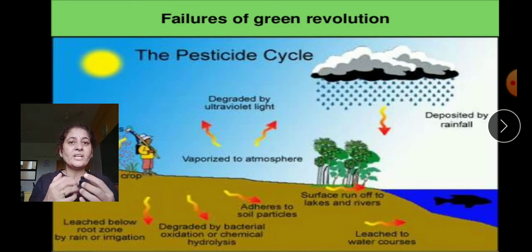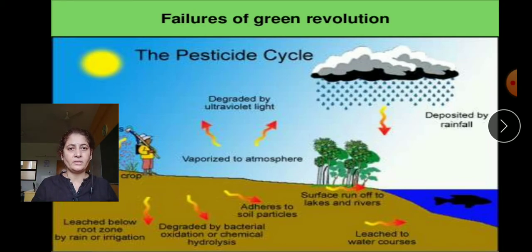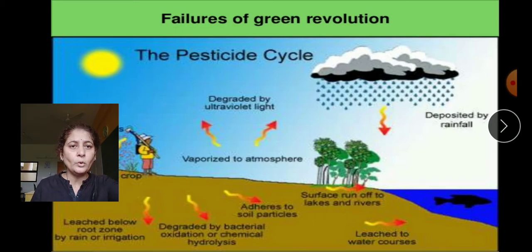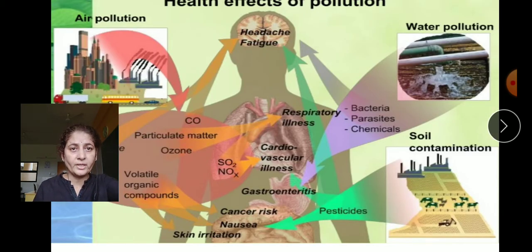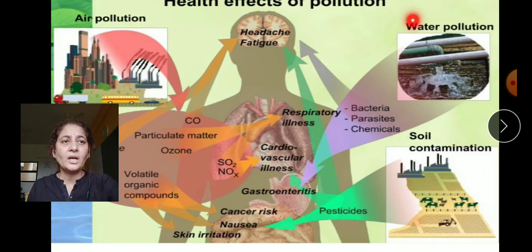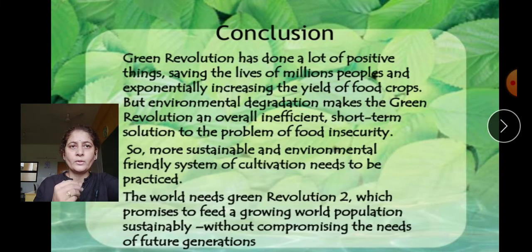Pesticides accumulate in the food chain — one organism eats another, passing chemicals up the chain until they accumulate in our bodies, potentially causing cancer. They cannot be excreted or degraded by bacteria because they are not natural substances. This also contaminates and pollutes our water and air. So we need to return to organic farming while maintaining productivity.